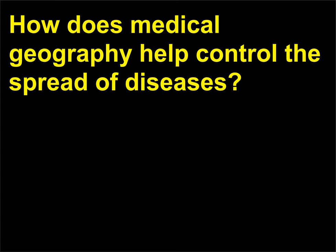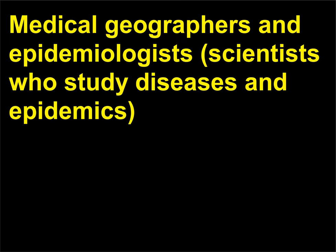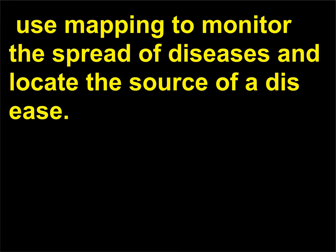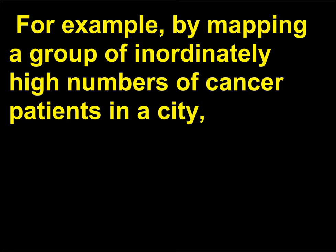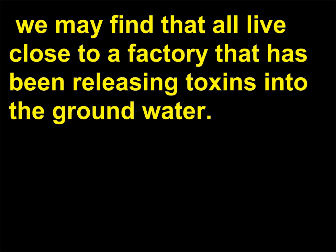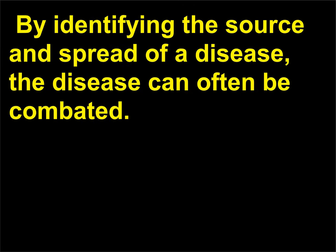How does medical geography help control the spread of diseases? Medical geographers and epidemiologists, scientists who study diseases and epidemics, use mapping to monitor the spread of diseases and locate the source of a disease. For example, by mapping a group of inordinately high numbers of cancer patients in a city, we may find that all live close to a factory that has been releasing toxins into the groundwater. By identifying the source and spread of a disease, the disease can often be combated.